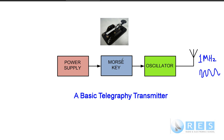A power supply, a Morse key — the Morse key turns the oscillator on and off. The oscillator radiates a signal on whatever frequency we want, and the Morse key turns that signal on and off according to a code. And by that method we can transmit messages to other radio operators.